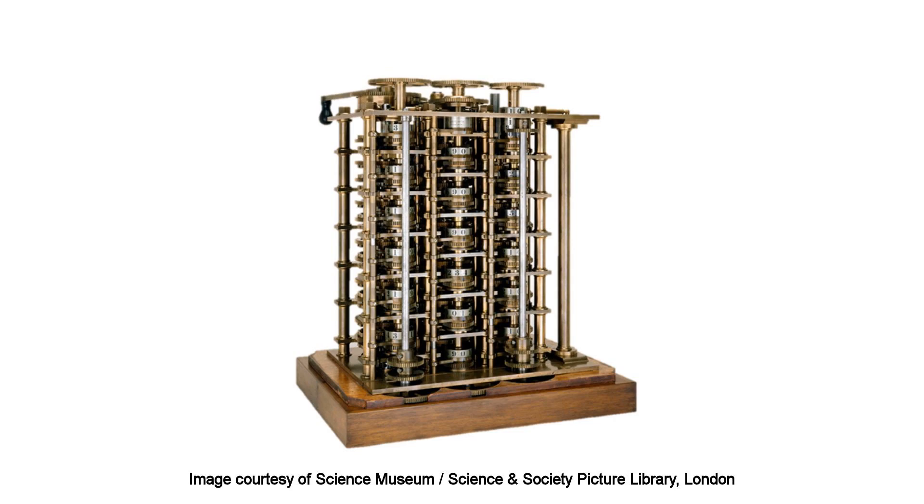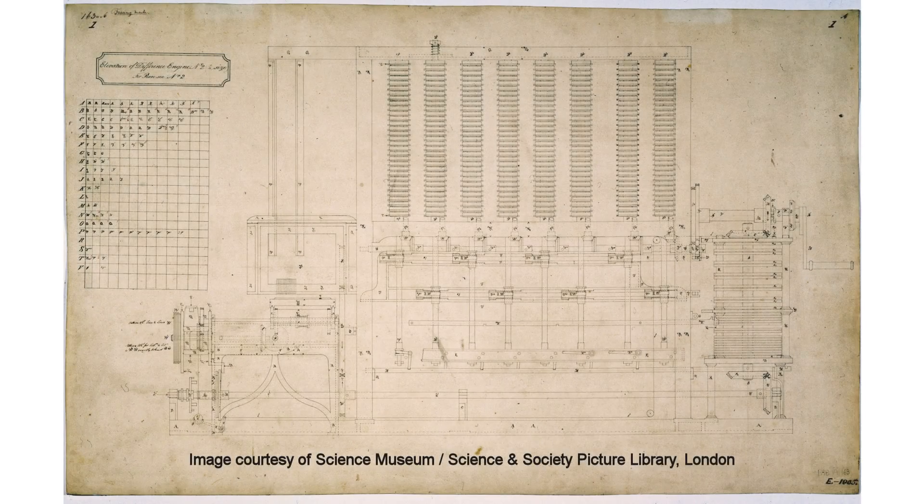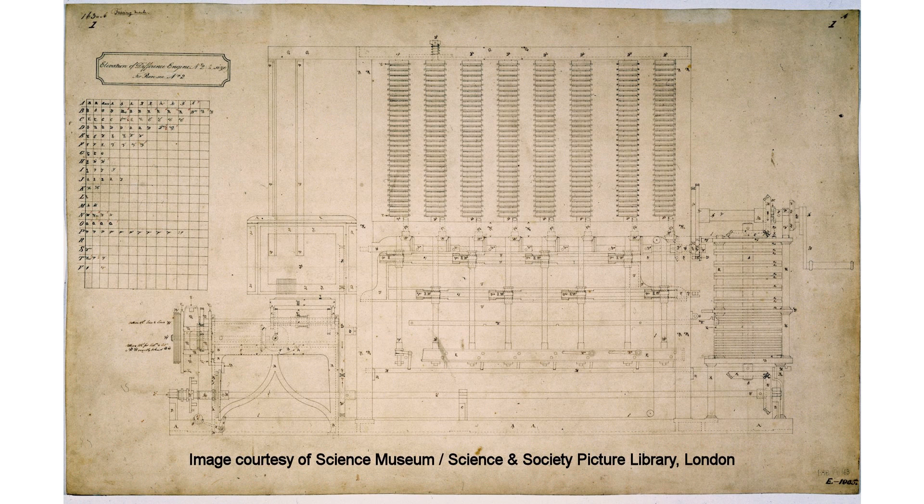During the period of 1847 through 1849, Babbage drew up plans for an improved device, his Difference Engine No. 2, which had fewer parts yet would calculate more quickly.